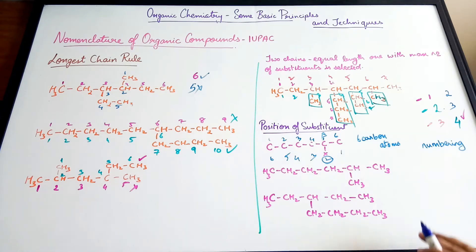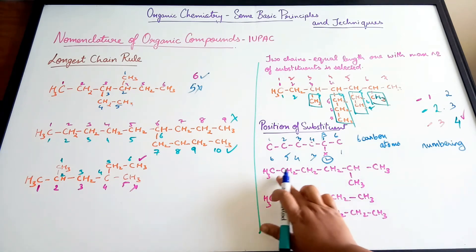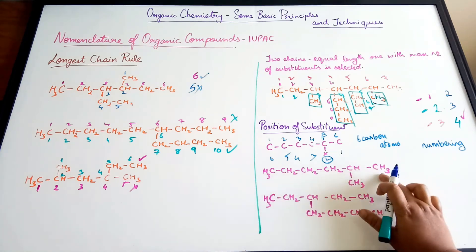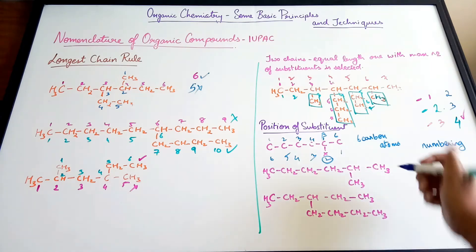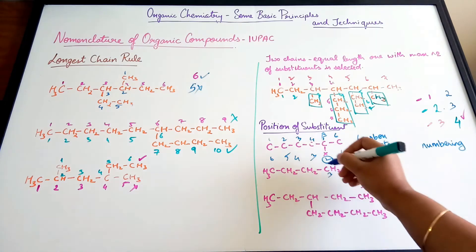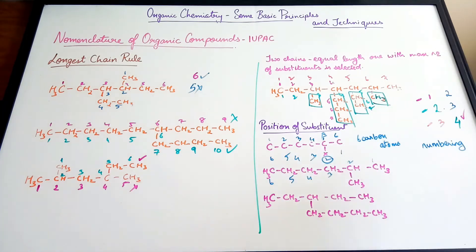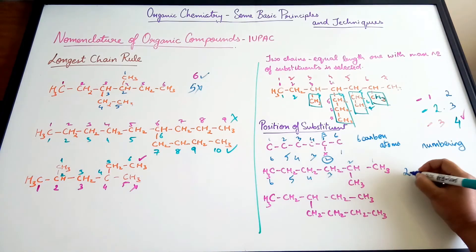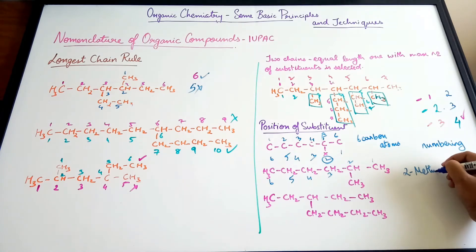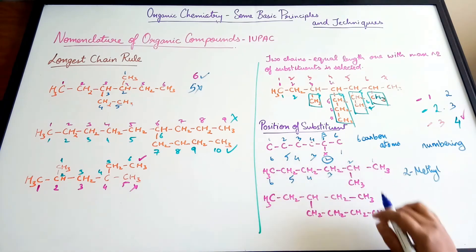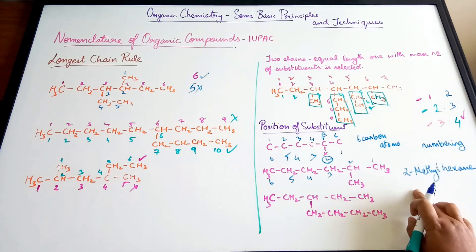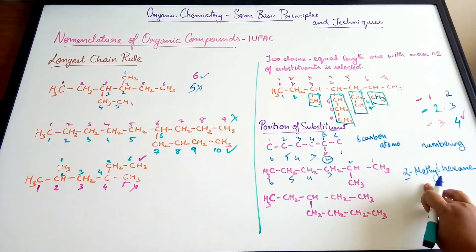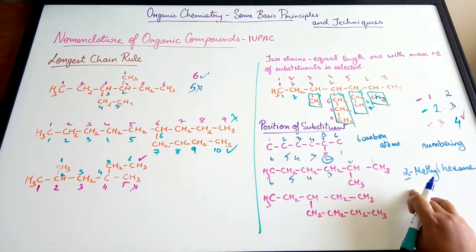The substituent should be present at a lesser number. If we go 1, 2, 3, 4, 5, 6, the methyl group is at the fifth carbon — and that is wrong. Instead, going the other direction: 1, 2, 3, 4, 5, 6, the name of the compound is 2-methylhexane, since it is a 6-carbon chain. The '2' shows that the methyl group is present at the second position.